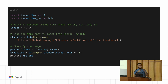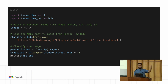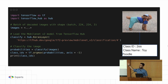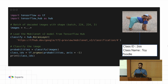One thing to keep in mind: whatever problem statement you're trying to solve, if that particular class already resides in the classes from that model, then this approach is something you can use directly from TensorFlow Hub. If there is a model you want to use and one of the classes — say the dog breed you want to classify — is already part of that model, you don't have to do anything fancy. You just download the model, make a prediction, catch hold of that prediction, and use it in a web application. The basic result: this particular dog breed is Toy Poodle.